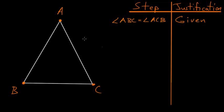What this is saying is that if we have some triangle ABC and we know that angle ABC is equal to angle ACB, then what we're trying to prove is that line AB is equal to line AC.